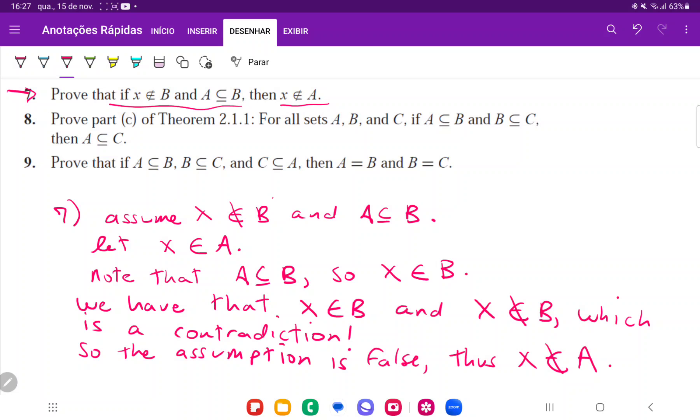So all we've done here is we've used proof by contradiction. We've assumed that x belongs to A, and because A is a subset of B, then x belongs to B, but that can't be, because then we have a contradiction. So x does not belong to A. And that is it for number 7.